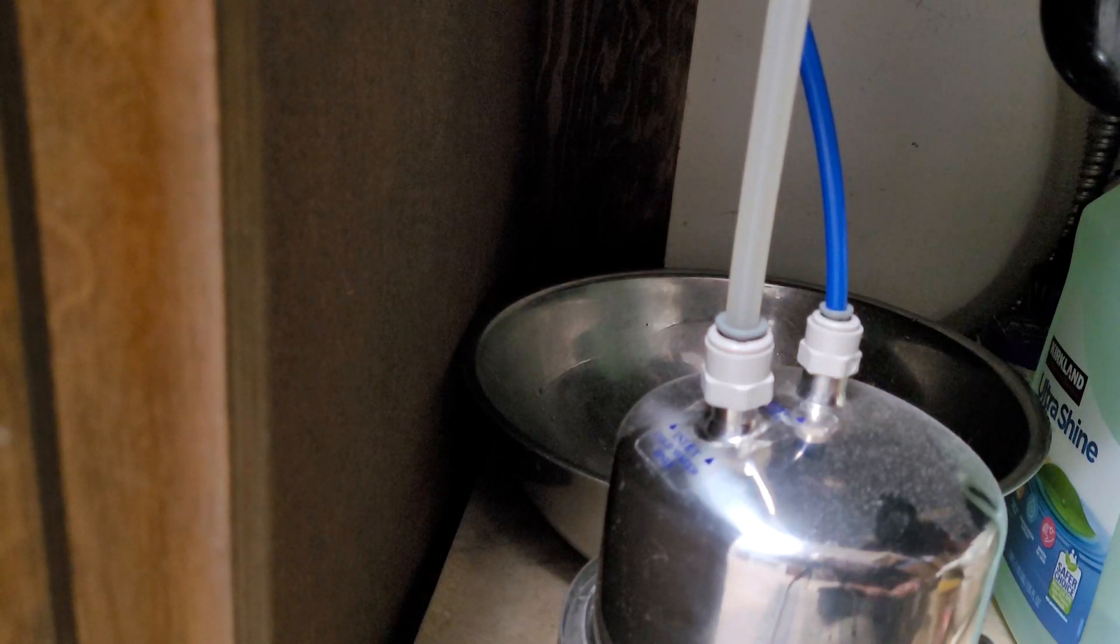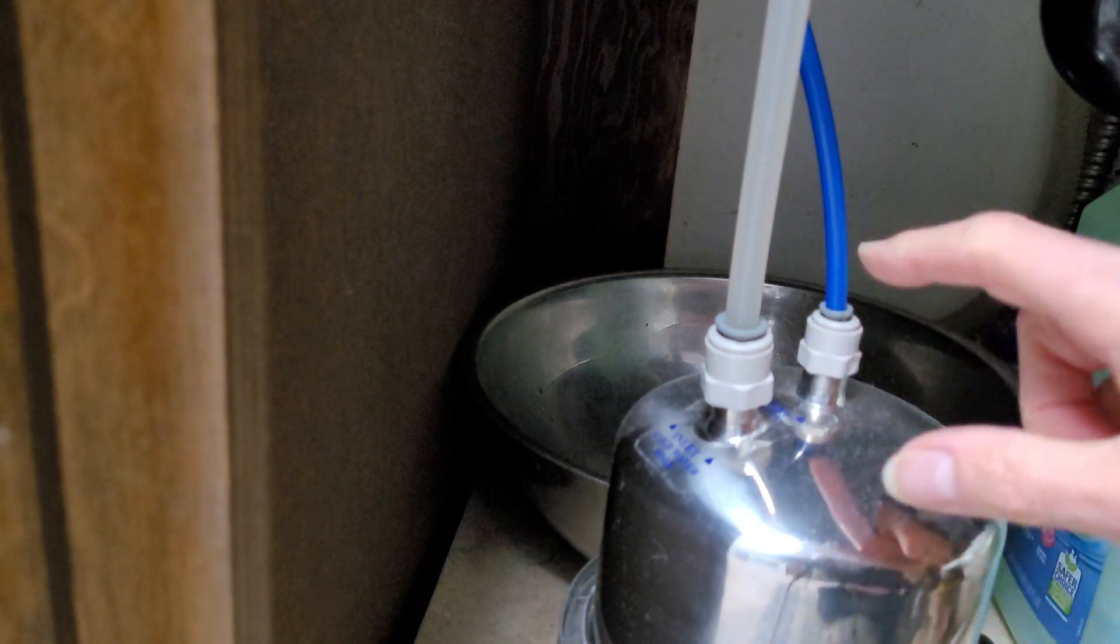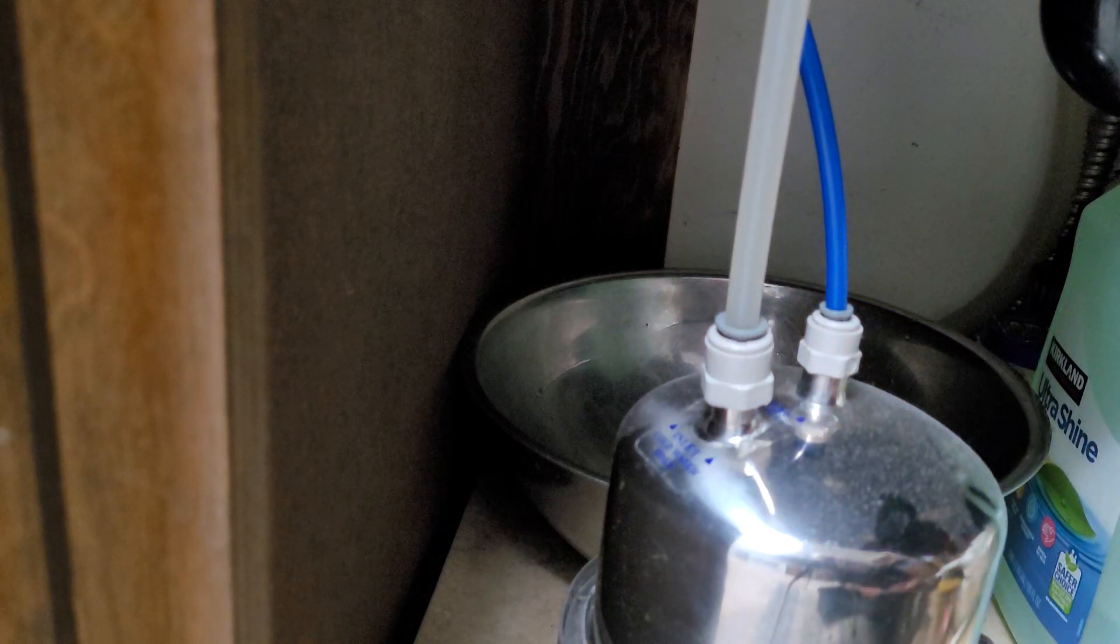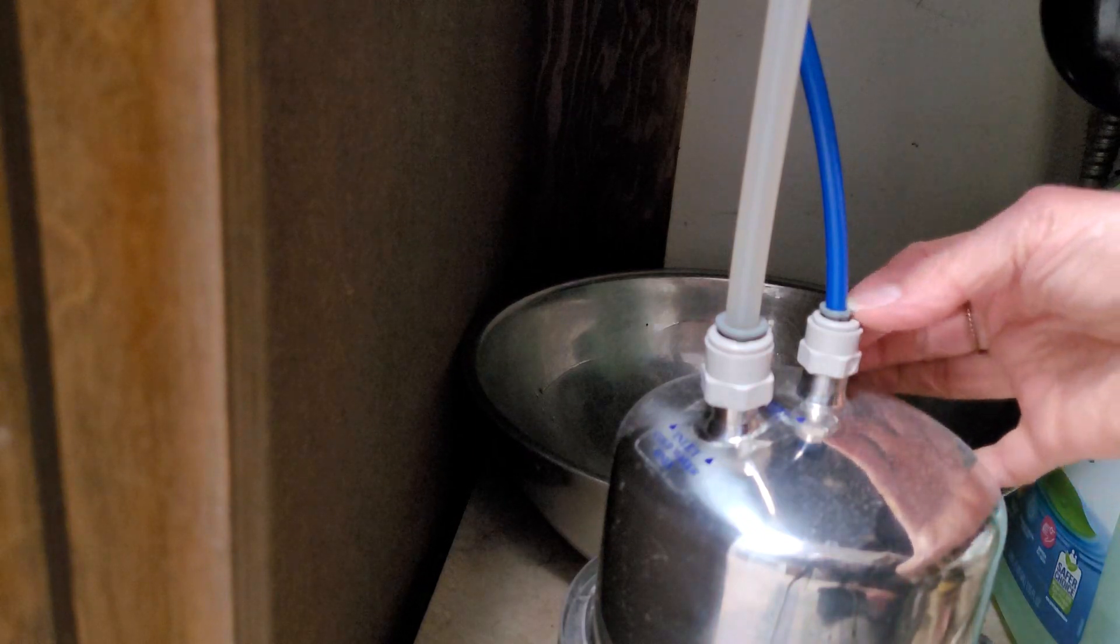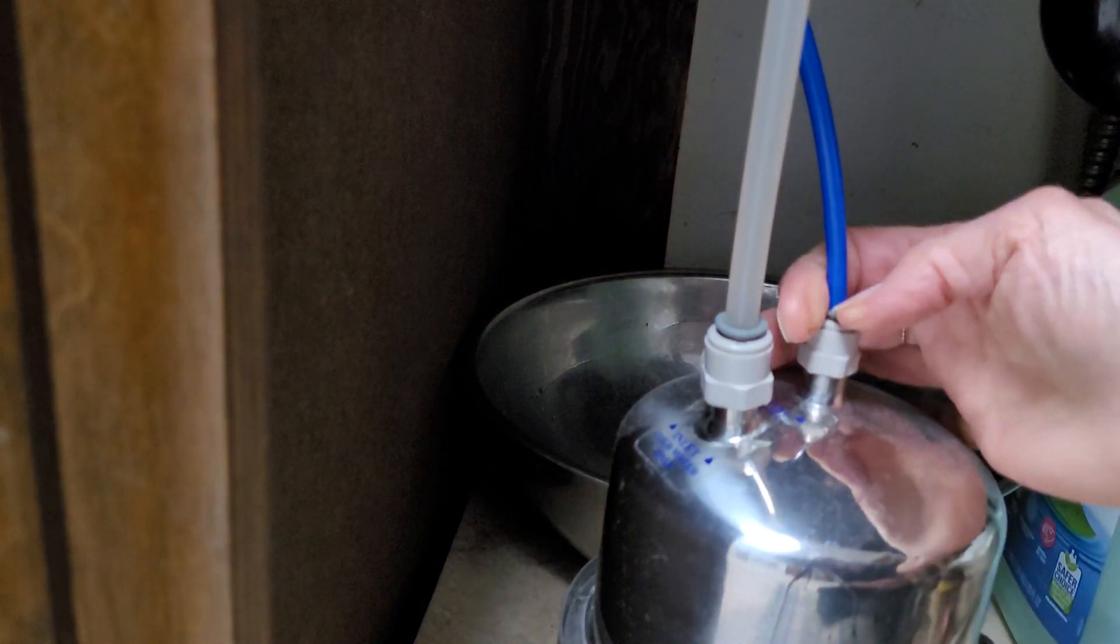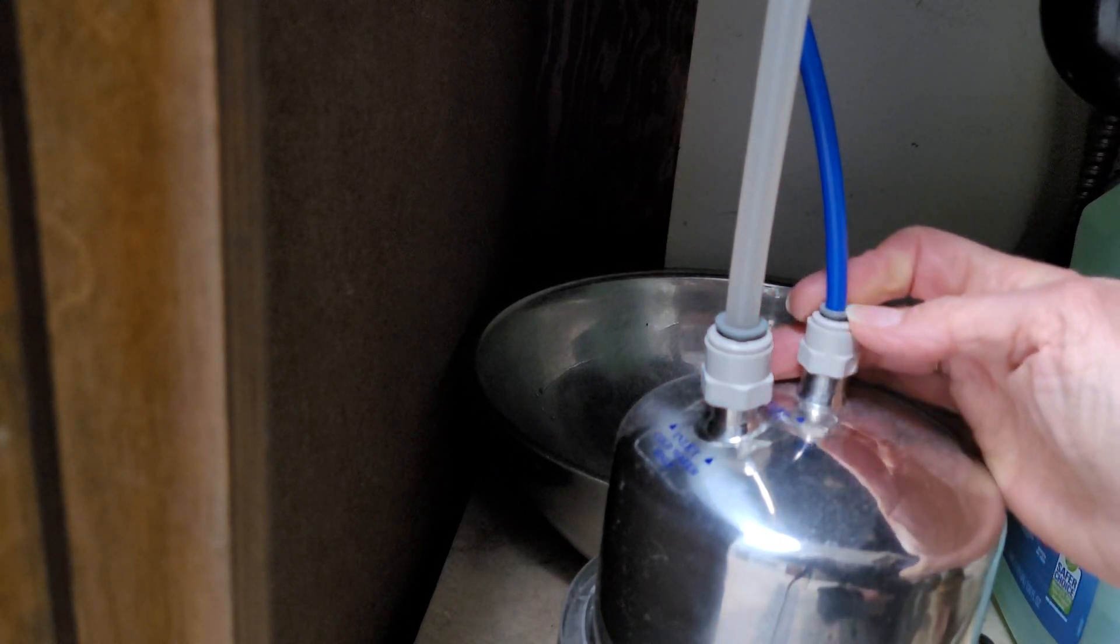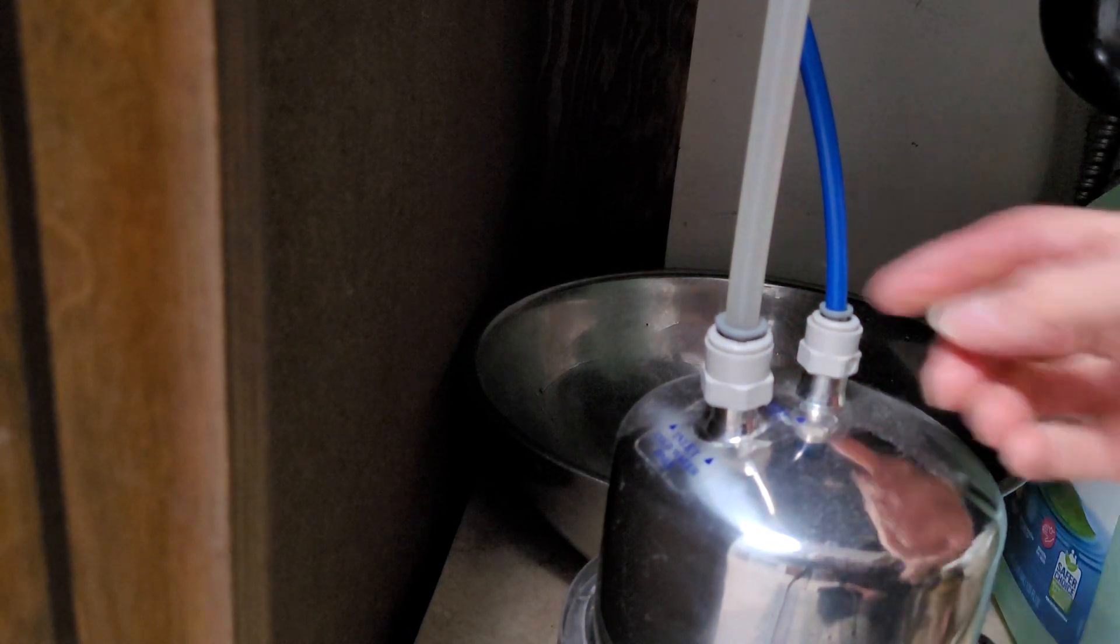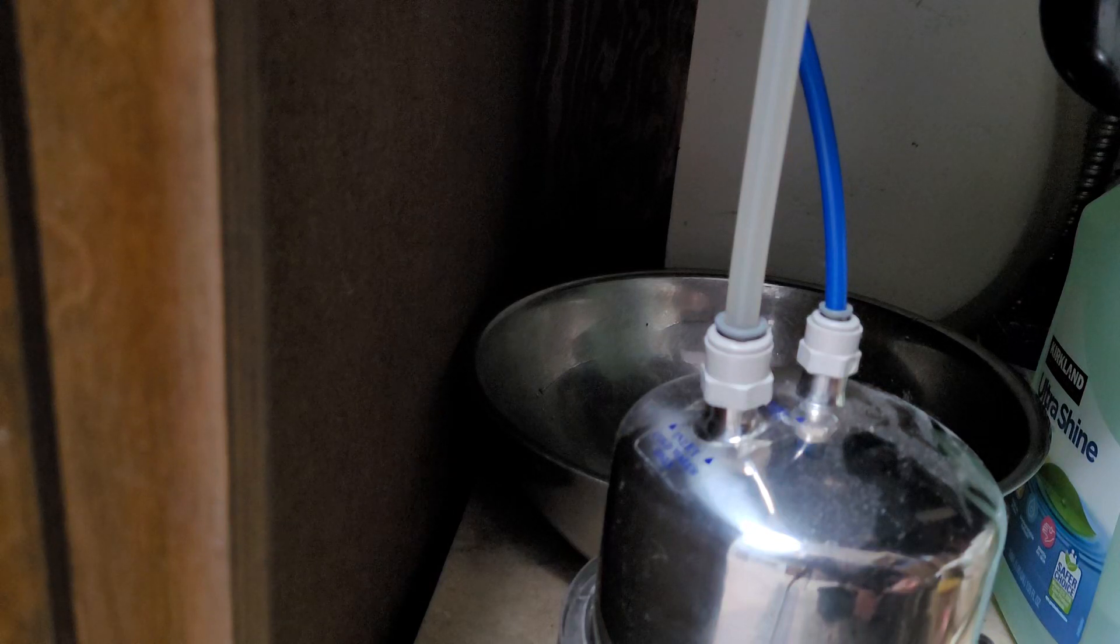To disconnect the tubing that goes to the Multipure faucet and the tubing from the water input source, let's do the faucet one first. You see this little gray washer. What you need to do is push down on that. It's really got a lot of pressure on it. You can utilize a dull butter knife to hold this washer down.